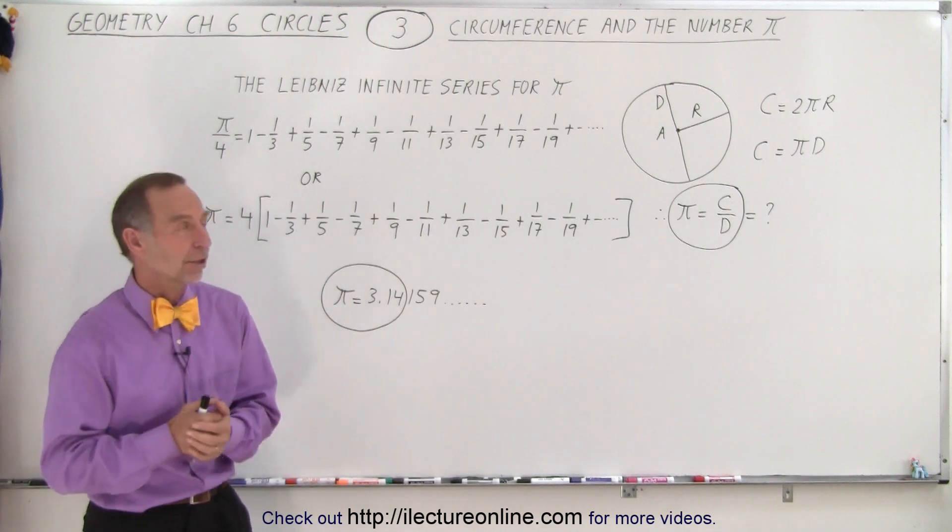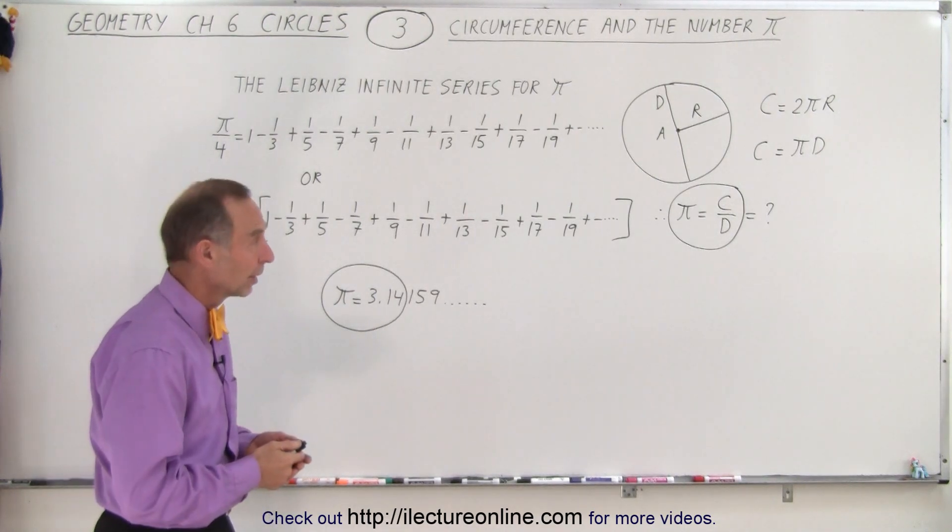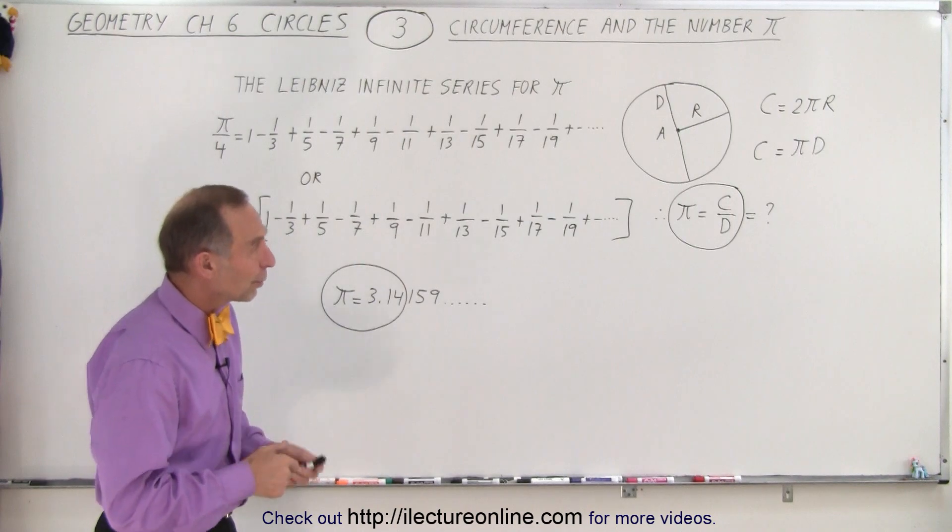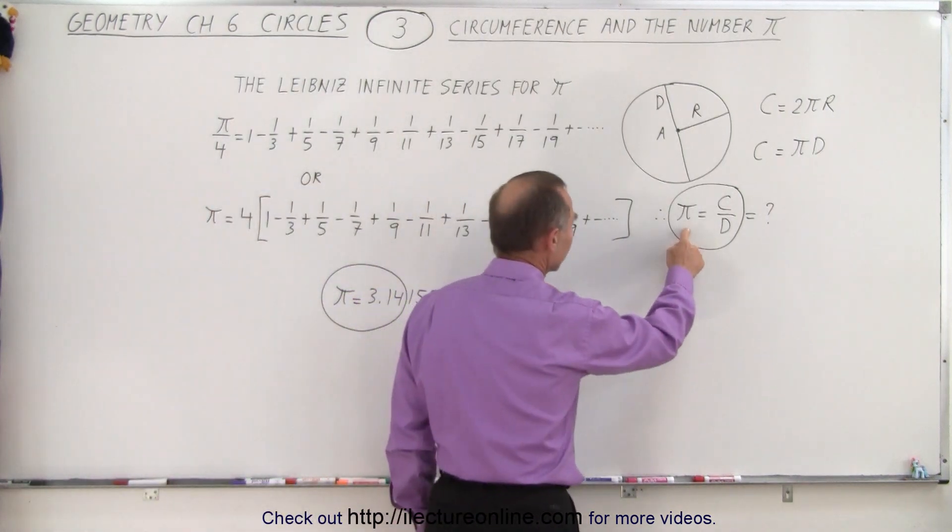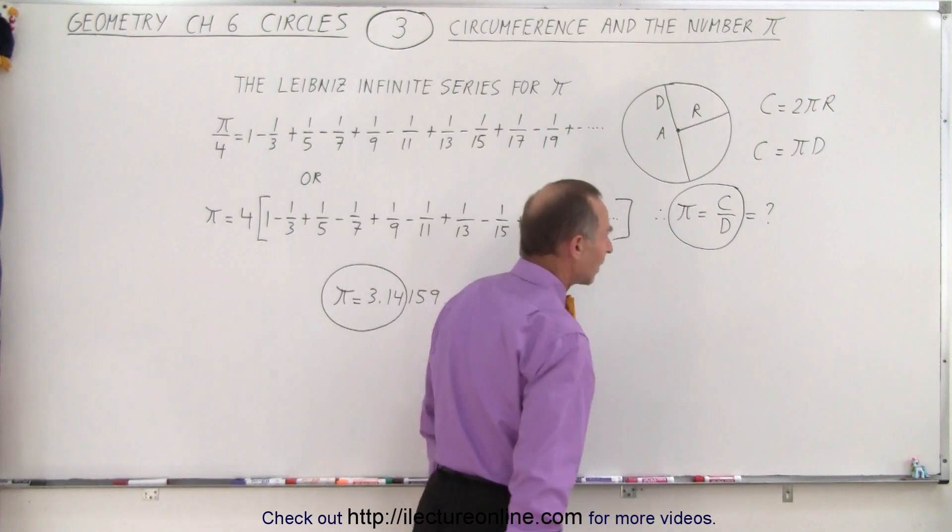Same equation essentially, since we know that the diameter is twice the radius. So what we can then do is define the number π by taking the circumference and dividing it by the diameter.